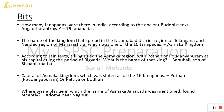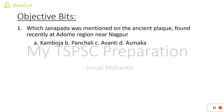The capital of the Asmaka Janapada was Potan or Paudanyapuram, which is present in Nizamabad (today's Bodhan). A plaque on which the name of Asmaka Janapada was mentioned was found at a domain near Nagpur — a plaque is a metal object on which inscriptions are written. Final objective question: Which Janapada was mentioned on the ancient plaque found near Nagpur? The options are Kamboja, Panchali, Avanti, Asmaka — the correct answer is Asmaka.